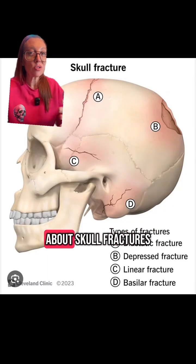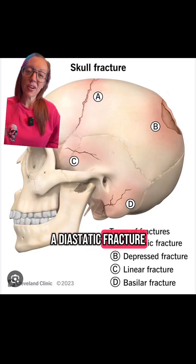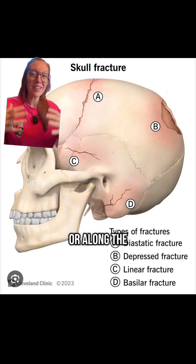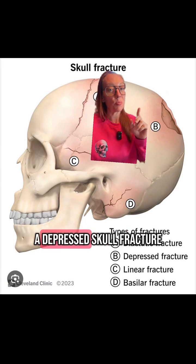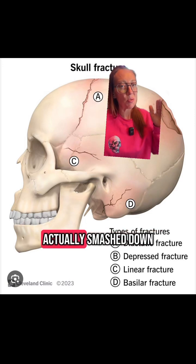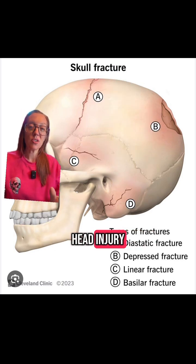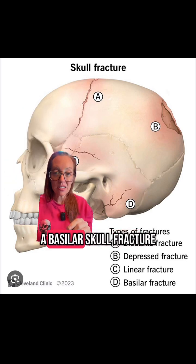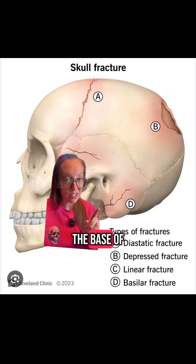Now when we talk about skull fractures, there are many different types. A is showing a diastatic fracture, which is a fracture along your suture line or along the natural planes where your skull closes when you're a baby. B is showing a depressed skull fracture, like in our patient, where a part of the skull is actually smashed down into the brain. C is the most common after any type of head injury, which is basically just a crack in the skull. D is representing a basilar skull fracture, which is a skull fracture along the base of the skull.